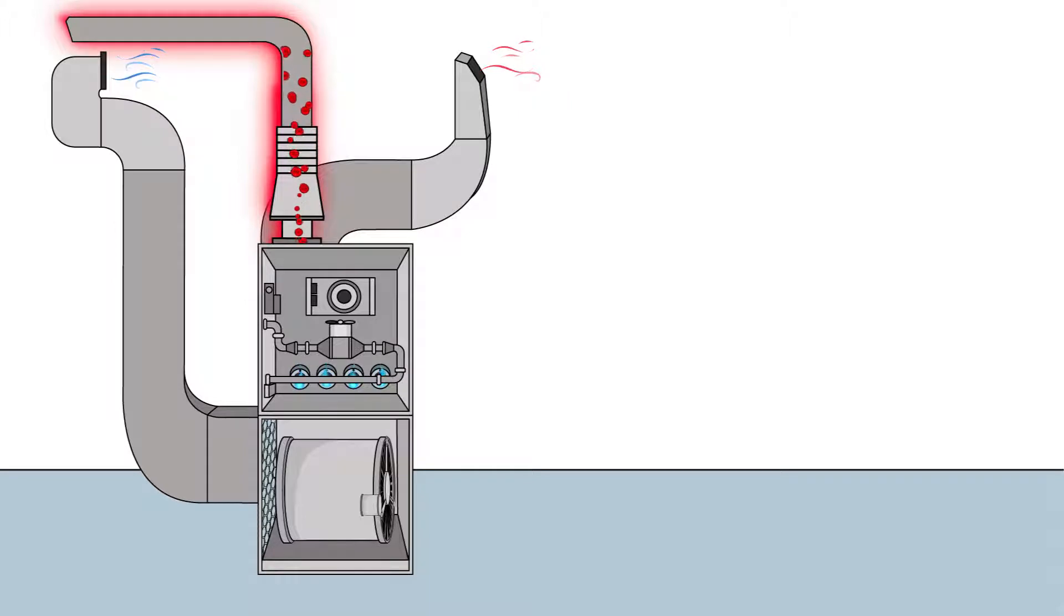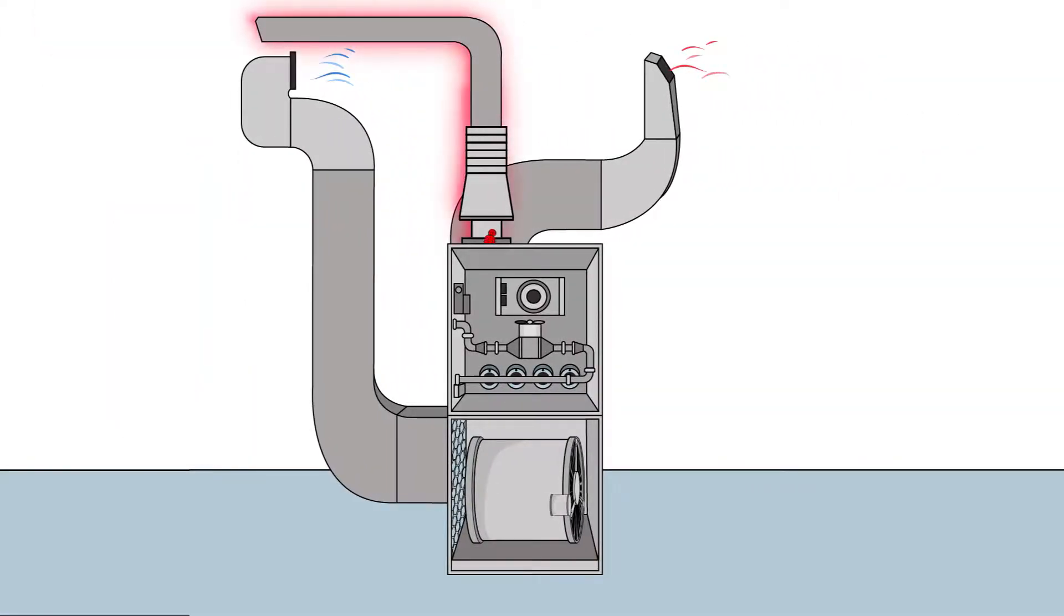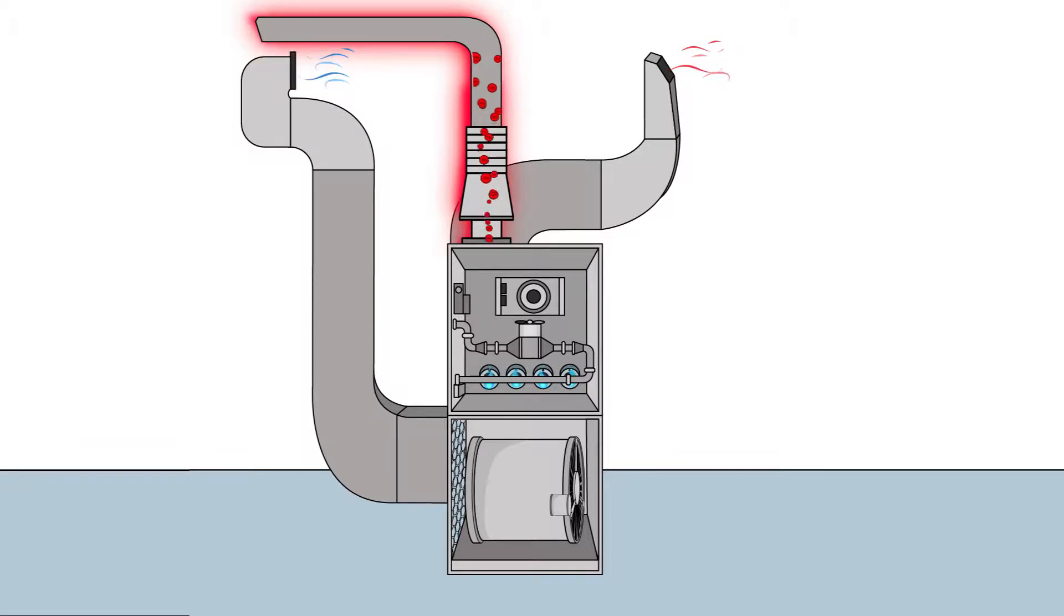During normal operation, natural gas fuels the flames, while electric current continues to run the inducer motor. Using negative pressure, the inducer motor draws the burner flames into the heat exchanger, causing it to warm.